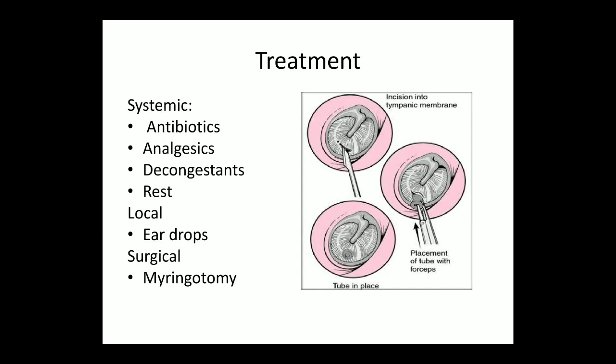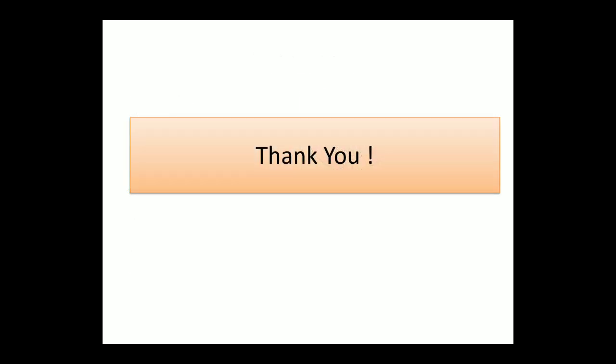Treatment includes analgesics, antibiotics, and rest for the patient. Local examination involves ear drops for decongestion. Surgical management includes myringotomy. In this diagram we can see the myringotomy incision given into the tympanic membrane in the inferior part, with placement of a tube using forceps. This tube remains in place until the discharges are completely drained out, after which the tube is removed so that the tympanic membrane can heal easily. Hope you liked the presentation — thank you very much.